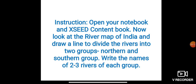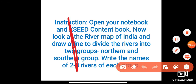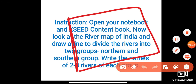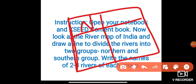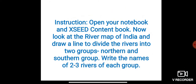How many rivers can you name under North? How many rivers can you name under South? You mention at least one, two, and three rivers in your notebook.